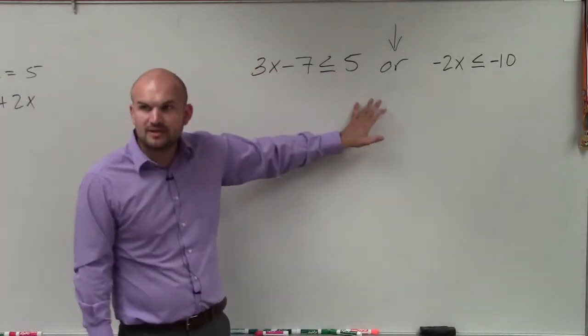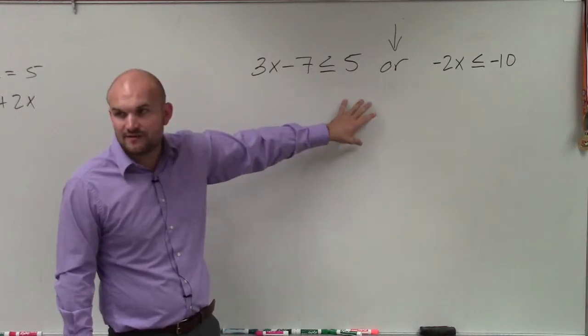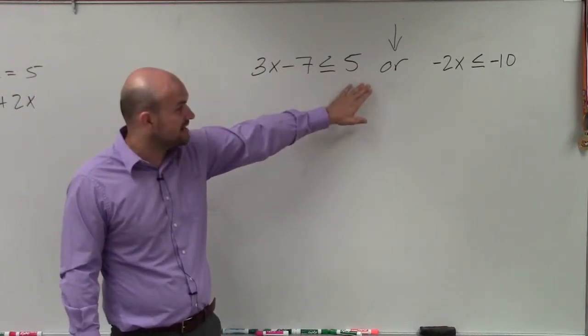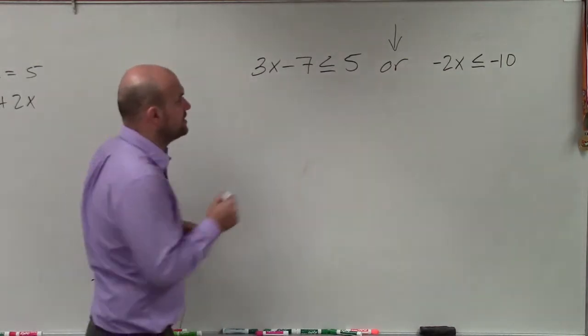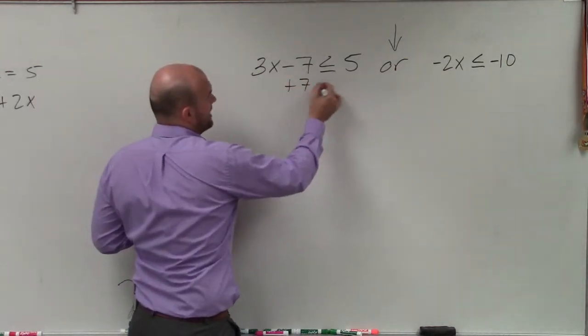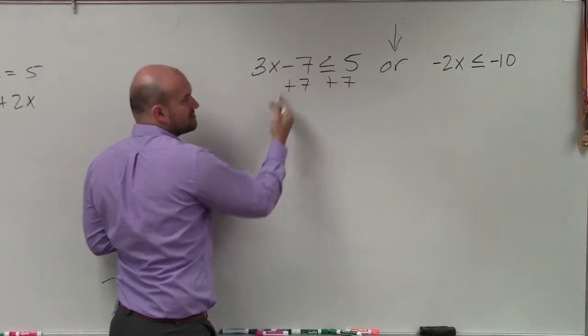So when solving a compound inequality, basically the only difference is, guys, we have two inequalities and this connector. This is going to help us with our graph. So what we're going to do is just solve each one individually. So the first one, I'll add 7. Just use my same operations.